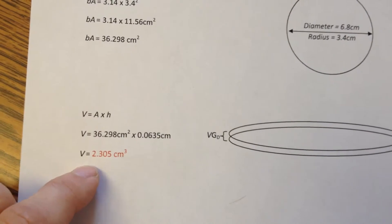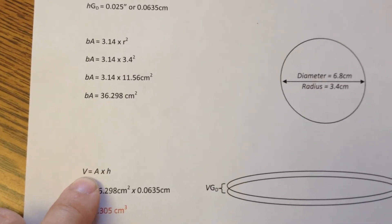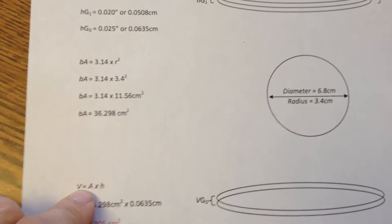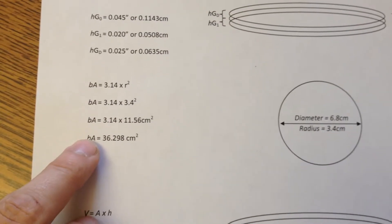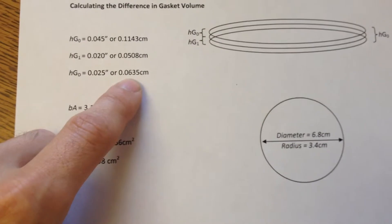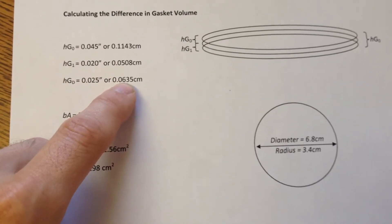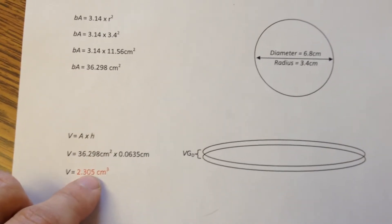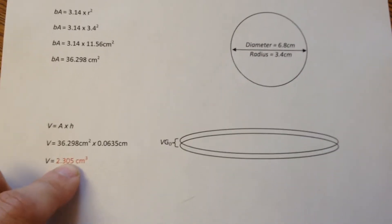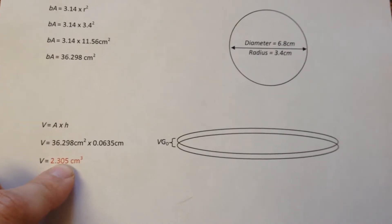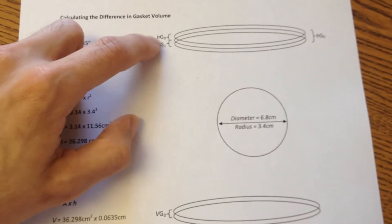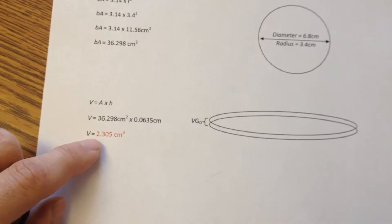Now that we know the height of the gasket and the area, we can calculate the volume. So using the simple volume equation, area times height, or you may commonly know it as length times height times width, we've already done half the work basically. So we just plug in the area, 36.298 or 36.3, and the height of the difference in the gasket, which would be 0.0635, multiply them together, which gives us a total void volume of 2.305 cubic centimeters. That is the amount of space that will be removed from the cylinder as we go from our large gasket to our smaller gasket. So this is the first critical number we'll need.